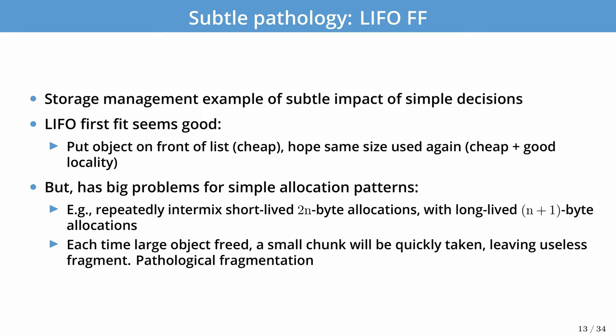Strategies like sorting by address or first-in-first-out might avoid some of the higher fragmentation of LIFO, but have other trade-offs. The last-in-first-out first fit allocation strategy is a nice example of subtle design choices that impact application performance. While freeing and allocating are just pushing and popping to the front of the list — very cheap with good cache locality — simple allocation patterns can cause problems. Imagine intermixing short-lived n-byte allocations with longer-lived n+1-byte allocations. Each time one of those larger objects is freed, a small chunk will be quickly taken by the n+1-byte allocations, leaving a fragment that can't be reused.